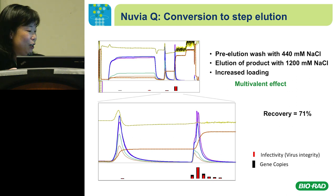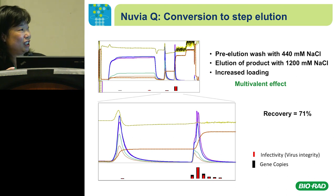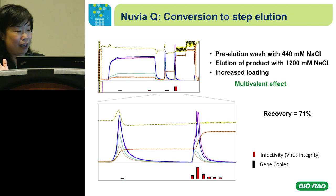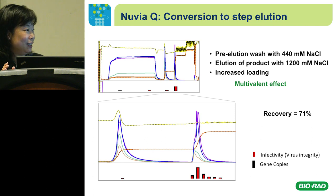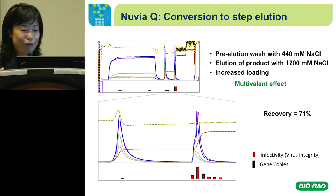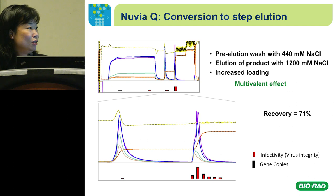After the loading phase, if you wash with 440 mM sodium chloride, you can remove inactive DNA pieces from the virus but not the active virus, and then recover the majority of virus activity in the second portion of the elution at around 1200 mM sodium chloride.